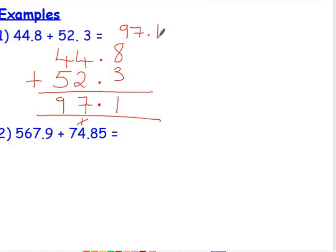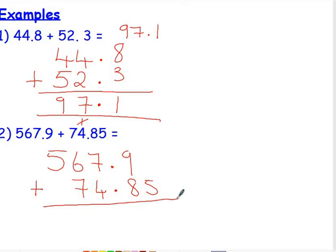Example 2: 567.9 plus 74.85. So 567.9 plus 74.85. Again, lining up them decimal points, so putting that decimal point straight in our answer.